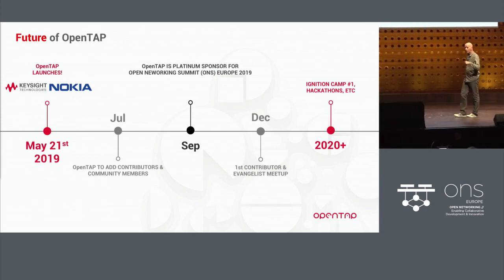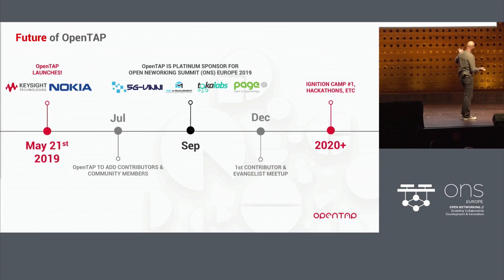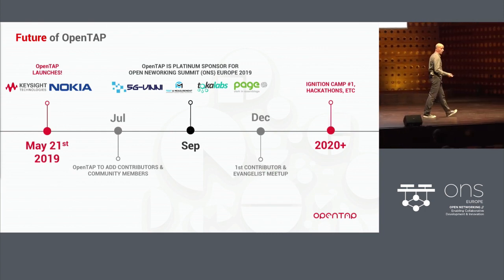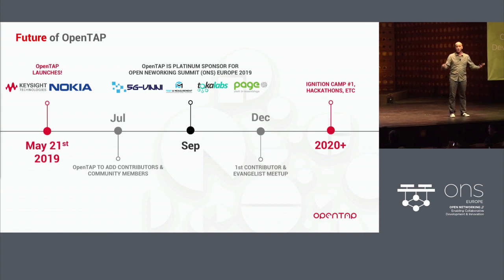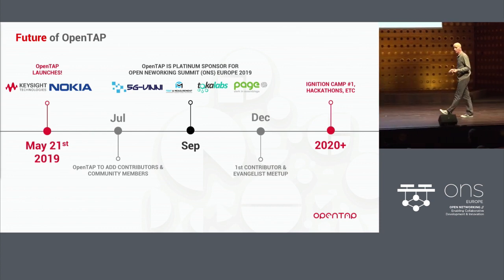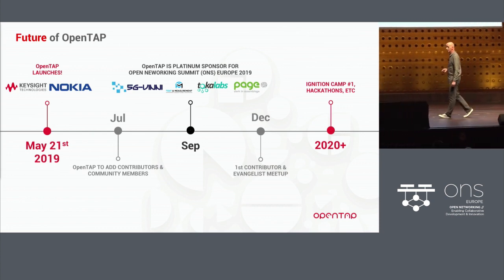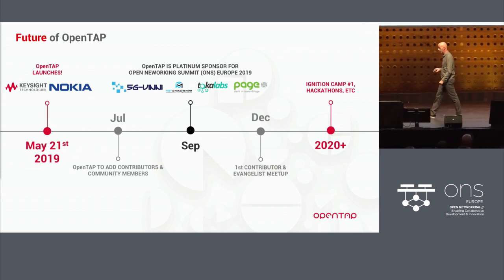In July, on top of that, we started talking directly to people who would be interested — either test and measurement companies, integrators, or companies like Toka Labs, a test-as-a-service company. They do this kind of work and got immediately interested. We've already engaged some companies to participate and contribute to this community, along with the company that founded it — ourselves and Nokia, because they were using it as well.